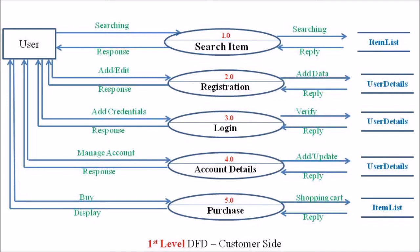The second process in the level 1 customer side DFD is the registration process. A customer can only order through the website if they are a registered customer — they must provide their name, personal address, contact details, payment modes, etc. in the registration format. These registrations are handled by the registration process, and the user's data is stored in the user detail data store.